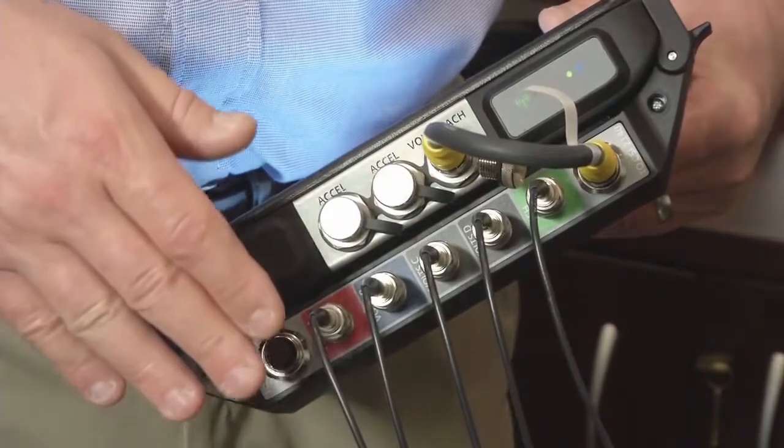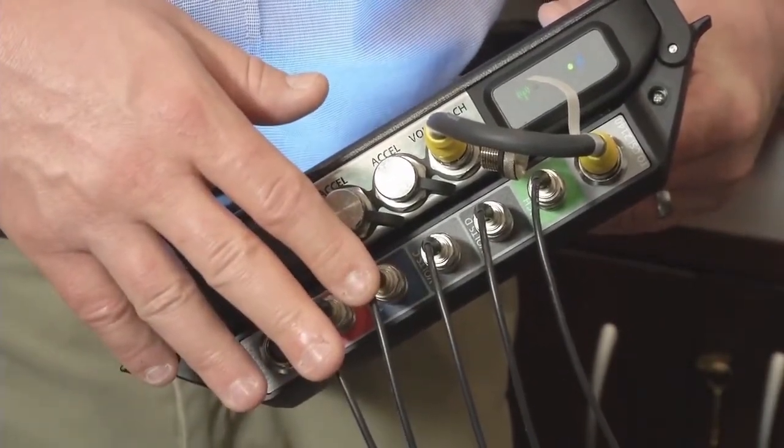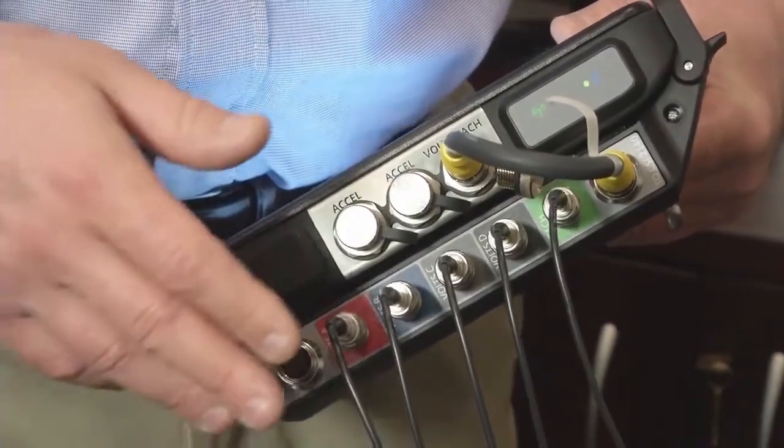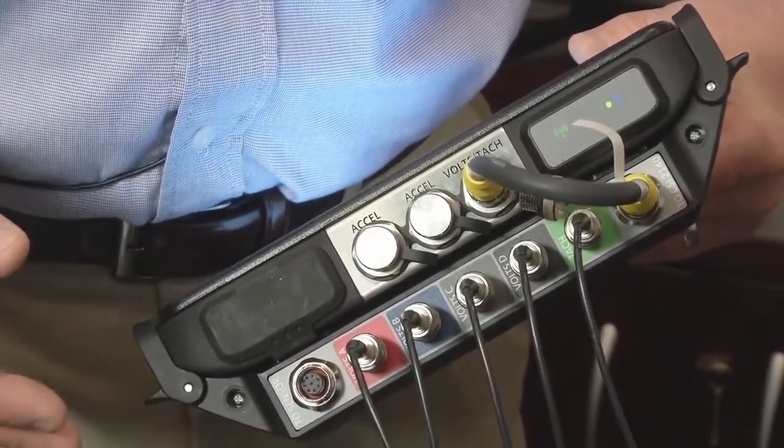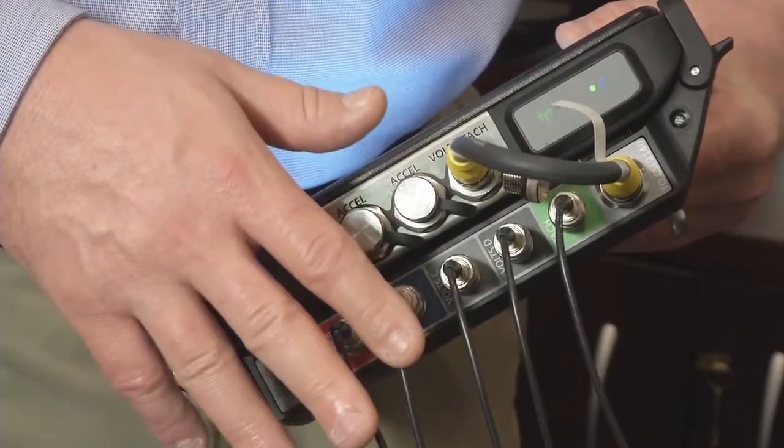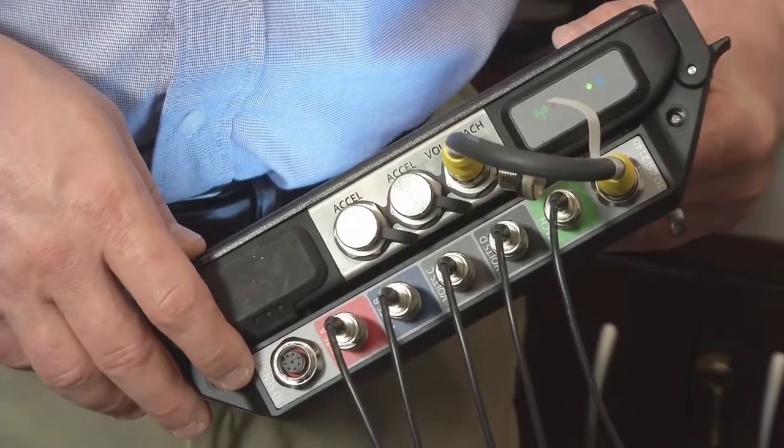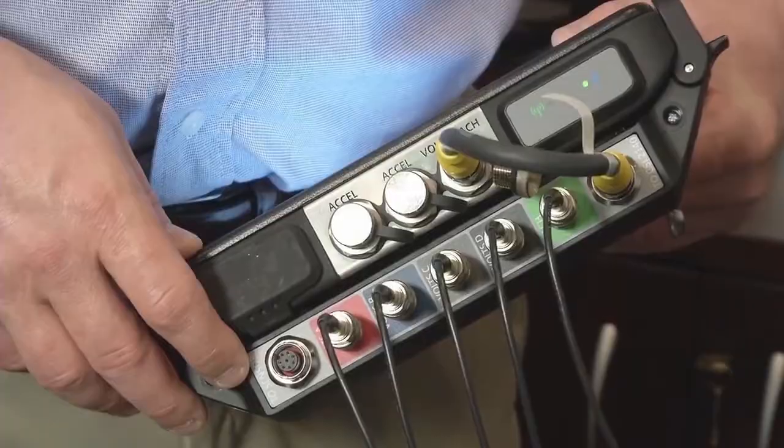Now the protection system, remember, is just there to shut down the machine in case something exceeds a vibration level. But it doesn't give you any diagnostic information about what went wrong or can you start the machine back up. And so that's why we're using the CSI 2140 to bring these signals in so we can understand the health of that sleeve bearing machine and can it be brought back up or is there something that needs to be corrected.